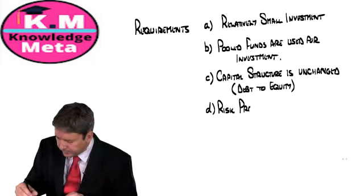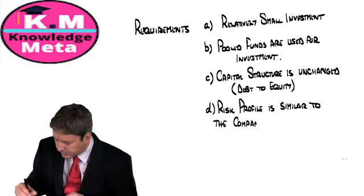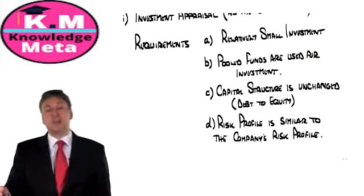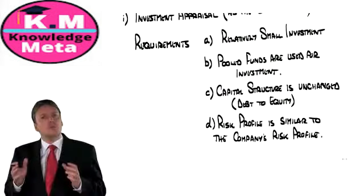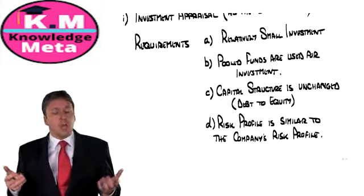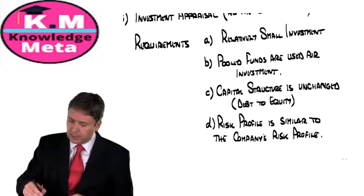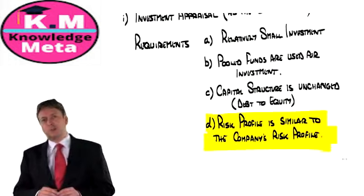Fourth, the risk profile of the new investment is similar to the company's existing risk profile. These are the four requirements for using the WACC as a discount rate. If they are not met, another methodology must be used. Based on the examiner's articles, this final requirement — risk profile — is the one the examiner is most likely to test, so be ready for it.